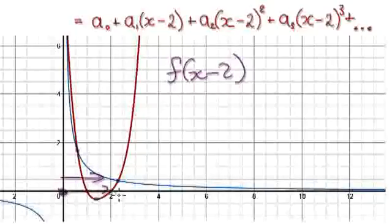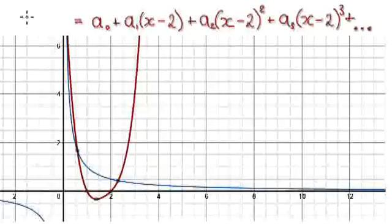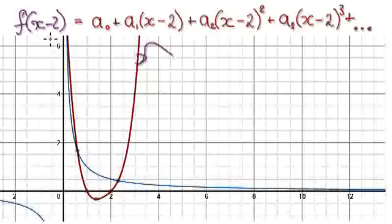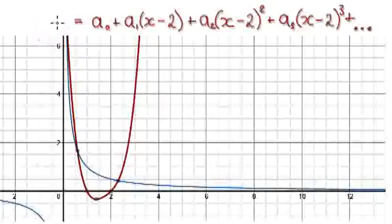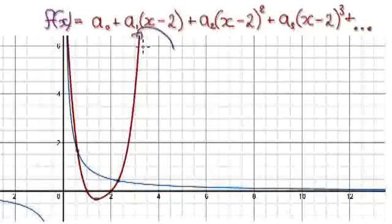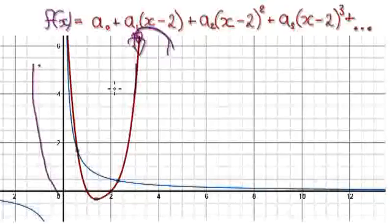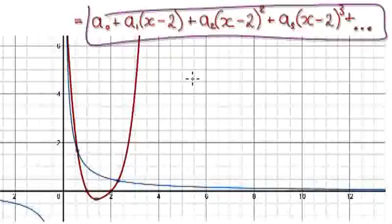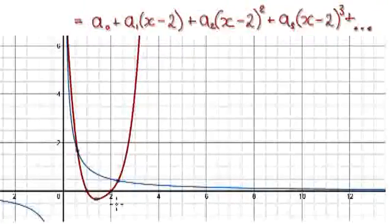We are now at 2, because we're trying to evaluate everything at 2. We can call this red line g of x, but rather than using a new name, let's just call it f of x. So f of x now represents this shifted version. We now demand that at x equals 2, certain conditions are met.